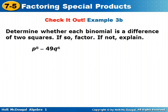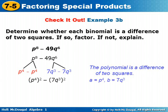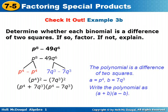Determine whether each binomial is a difference of two squares. If so, factor. If not, explain. For p to the 8th power minus 49q to the 6th power — try this on your own and check back. p to the 8th is a perfect square — p to the 4th times p to the 4th. 49q to the 6th can be broken into 7q to the 3rd times 7q to the 3rd. The polynomial is a difference of two squares. Our a value is p to the 4th and our b value is 7q to the 3rd, written as p to the 4th squared minus 7q to the 3rd squared. We write it as a plus b times a minus b: p to the 4th plus 7q to the 3rd times p to the 4th minus 7q to the 3rd.